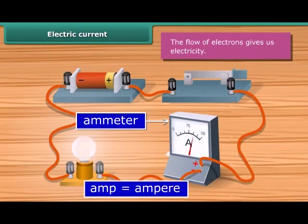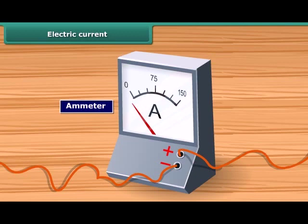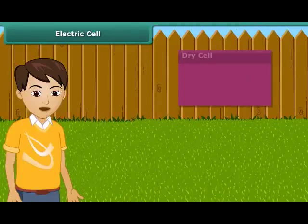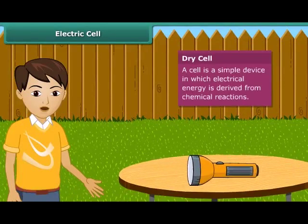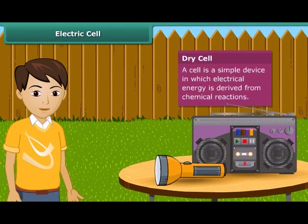Electric current is measured by ammeter. Dry cell battery used in a torch or transistor radio is a source of electric current.